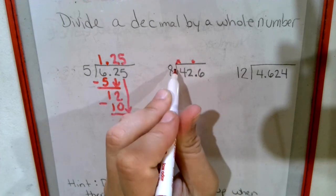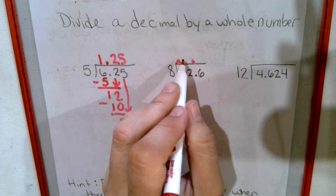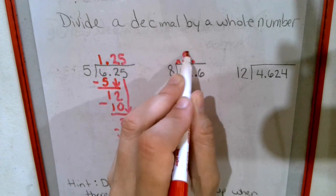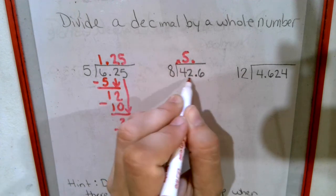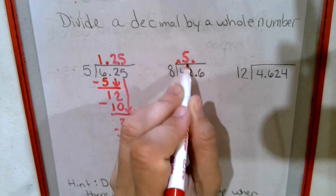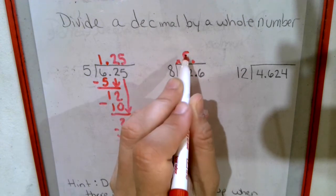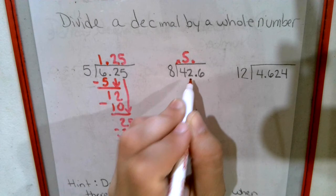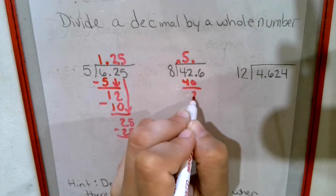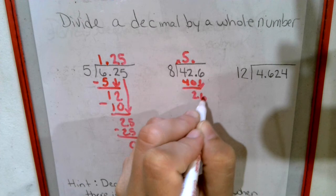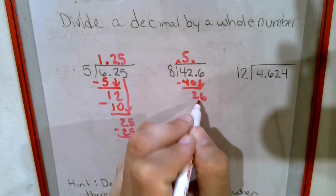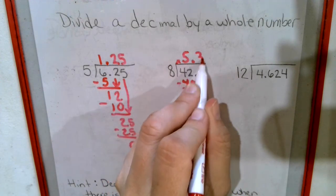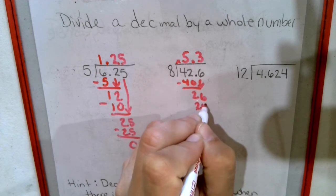8 does not go into 4. 8 goes into 42 five times. Since it's going into 42, I put it underneath the part of the number, the last spot of the number. So there's 42.